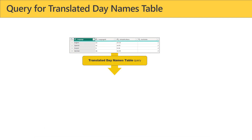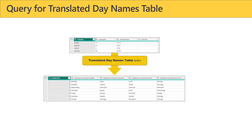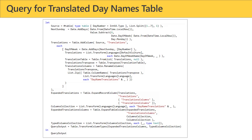For the translated day names table, this query performs the same operation, but instead of having month number and 12 rows, we have day number and seven rows. We have one column per language with the lookup tags. Looking at the M code — where we pass Date.DayOfWeekName, that underscore is how we pass the default culture inside there.